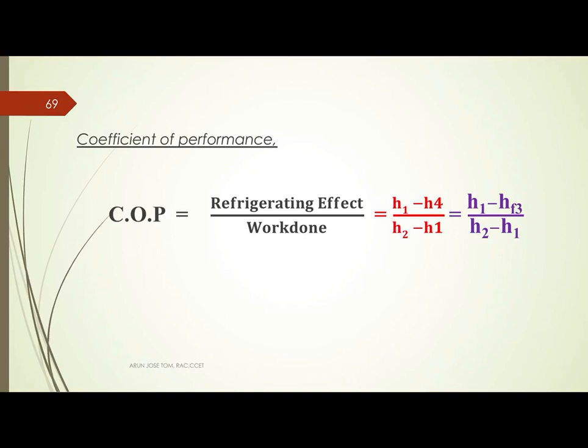Next, the coefficient of performance: COP equals refrigerating effect divided by work done. The refrigerating effect is H1 minus H4, and the work input to the compressor is H2 minus H1. So COP equals (H1 minus HF3) divided by (H2 minus H1).